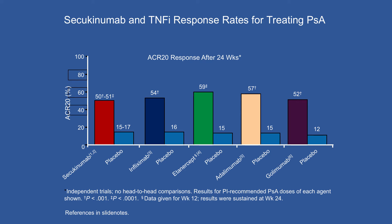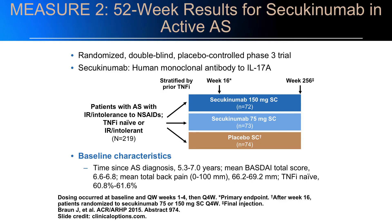You can't necessarily compare across trials, but it's interesting to see secukinumab next to the TNFs, because that's often the decision we're making in clinic. Here it looks pretty comparable, though clinical practice experiences can vary widely. For ankylosing spondylitis specifically, looking at different doses versus placebo, we also see good results in physical function improvement.